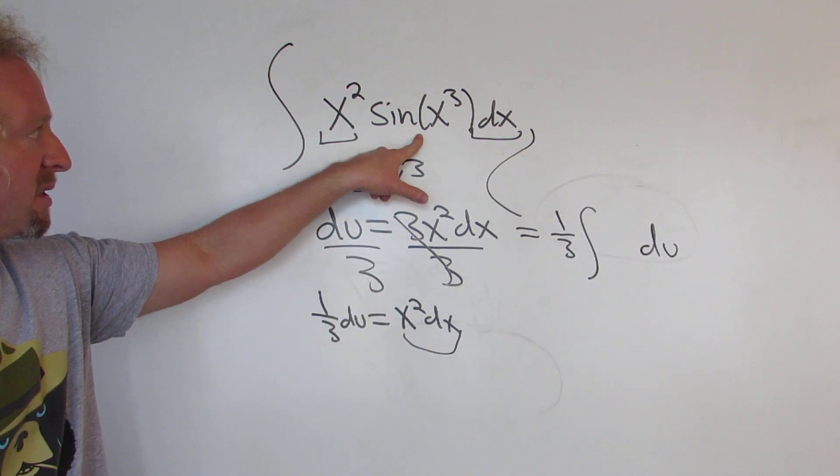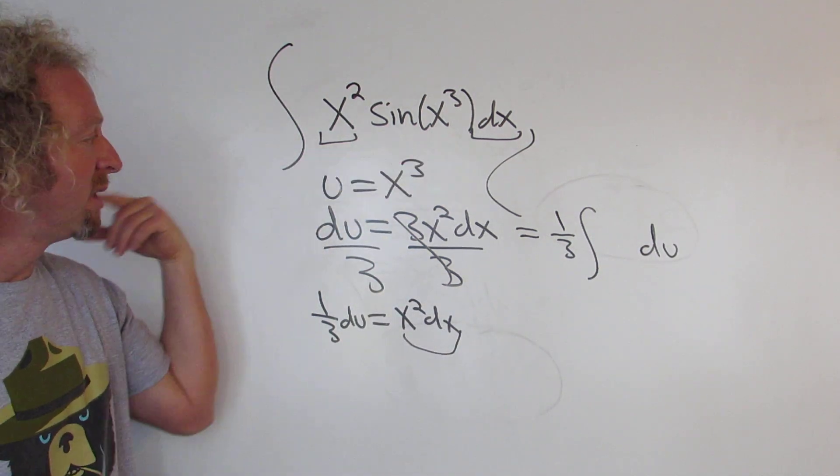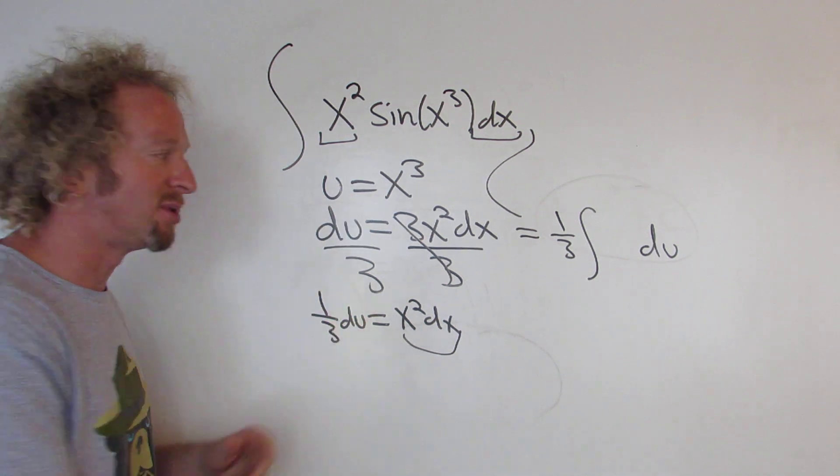And now all that's left is the sine. So sine of x cubed. But we said u was equal to x cubed. So this is the sine of u.